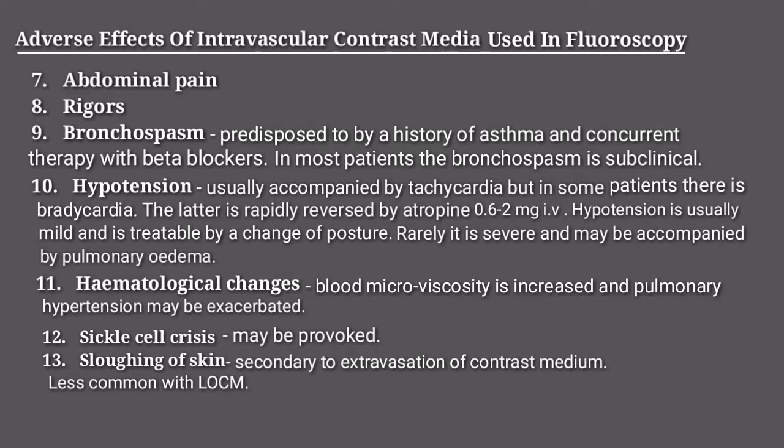Bronchospasm is predisposed by a history of asthma and concurrent therapy with beta-blockers. In most patients the bronchospasm is subclinical. Hypotension usually is accompanied by tachycardia, but in some patients there is bradycardia, which is rapidly reversed by atropine 0.6 to 2 mg IV. Hypotension is usually mild and treatable by a change of posture.